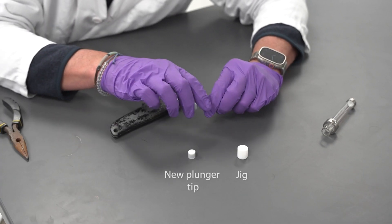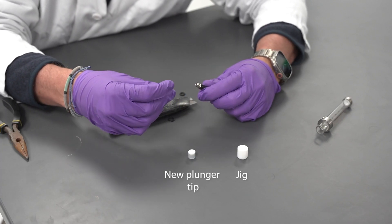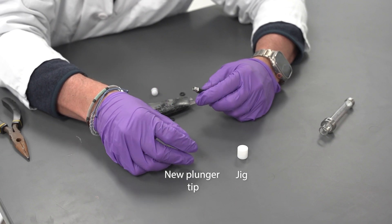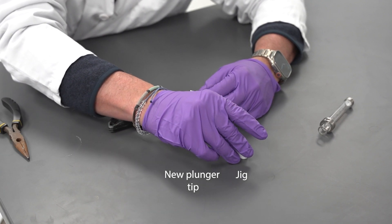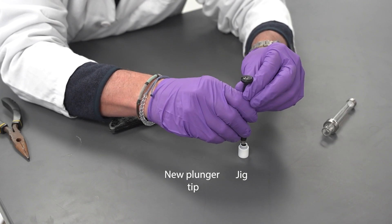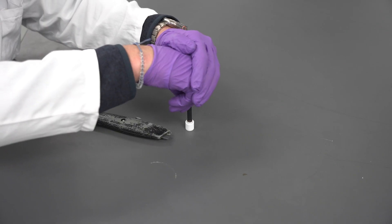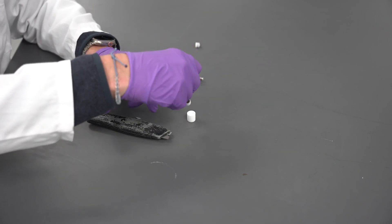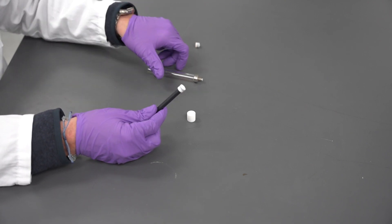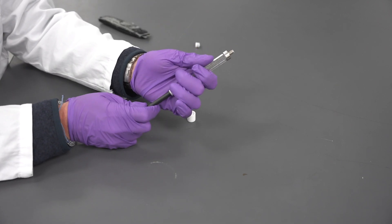Place the new plunger tip on the end of the plunger and use the jig to seat the plunger tip onto the plunger. It's very important to use this jig to seat the new plunger tip to retain the shape of the tip. Using a flat surface to seat the plunger tip will result in a deformed plunger tip.